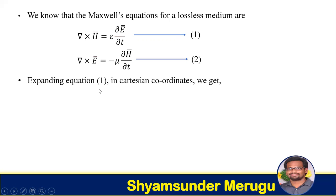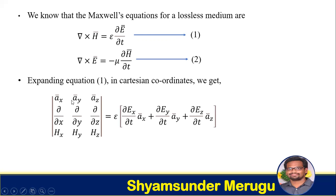Expanding equation 1 in Cartesian coordinates, we get the determinant form. The first row takes ax bar, ay bar, az bar. The second row takes partial over partial x, partial over partial y, partial over partial z. Hx, Hy, Hz are the third row components. This equals epsilon times partial Ex over partial t, ax bar, plus partial Ey over partial t, ay bar, plus partial Ez over partial t, az bar.